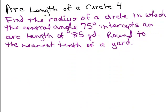This is our fourth example on arc length. Let's do this problem here. Find the radius of a circle in which the central angle 75 degrees intercepts an arc length of 85 yards. And then we're going to round the answer to the nearest tenth of a yard.